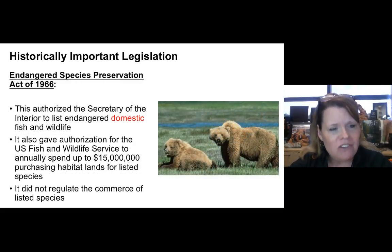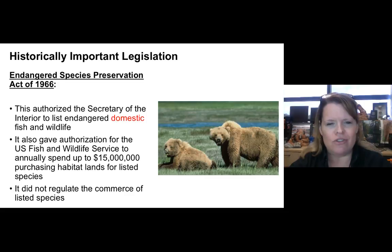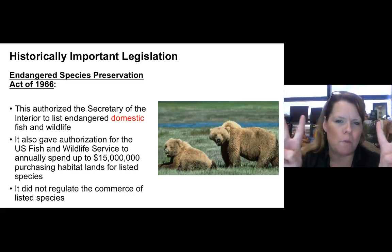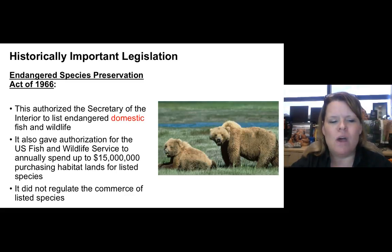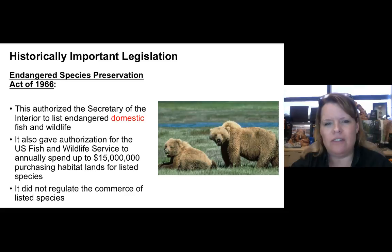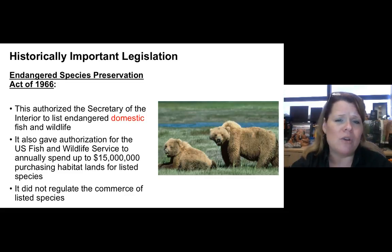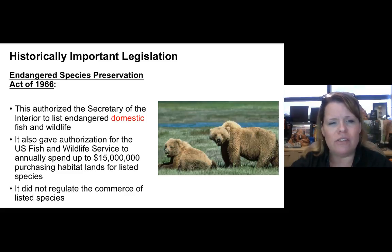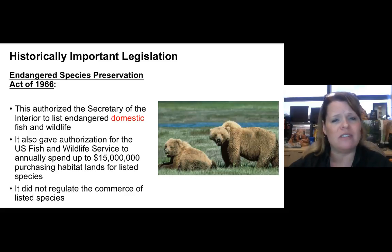The Endangered Species Preservation Act of 1966 authorized the Secretary of the Interior to list endangered domestic U.S. fish and wildlife. It gave authorization for the U.S. Fish and Wildlife Service to spend up to $15 million a year to acquire land and find suitable habitat for listed species. Importantly, this act did not regulate commerce of endangered species — that would come later. The Preservation Act was specifically about domestic species.